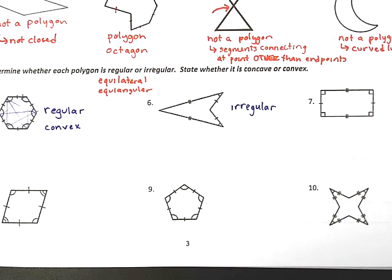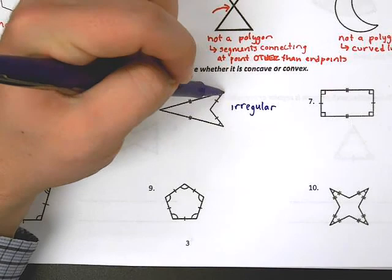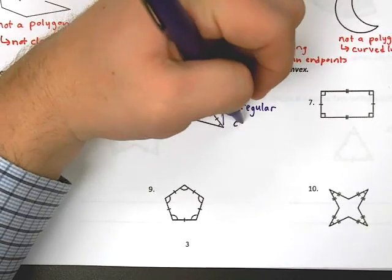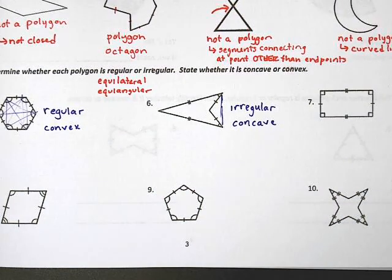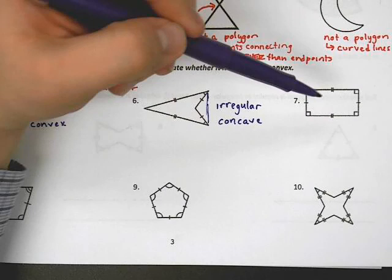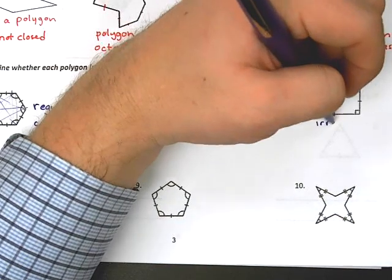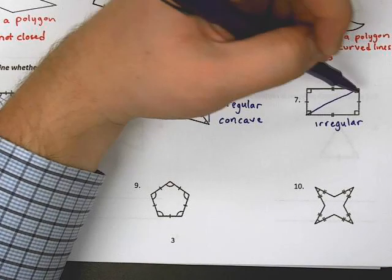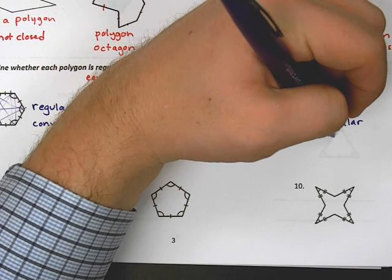Moving to number six: this is irregular. I can tell because these have double tick marks and these have single — they're not all the same sides, so it's already not equilateral, which means we have to be irregular. Are there any diagonals that would occur in the exterior? Absolutely — if I draw from this endpoint to this endpoint, that diagonal is outside of the polygon, so it's concave. The polygon is caved in. For number seven, just be careful: it has to be equilateral and equiangular. The angles are all 90 degrees, so we're equiangular. But equilateral — I have single ticks and doubles, so this is irregular. I draw diagonals and they're both inside the polygon, so we have to be convex.